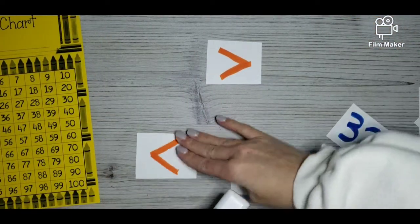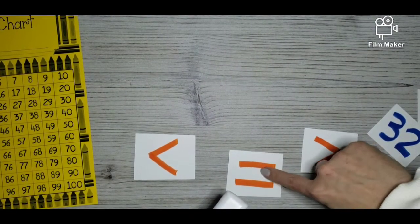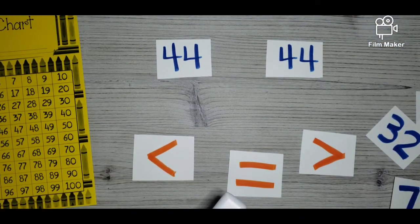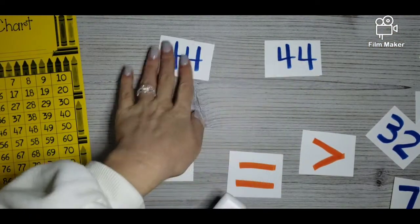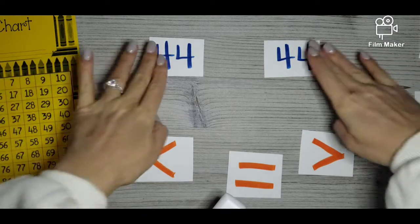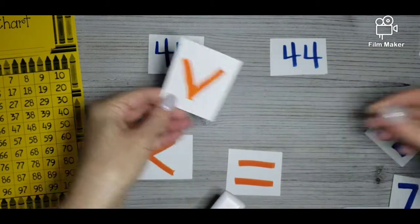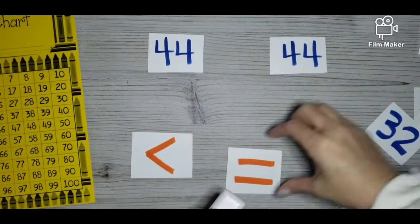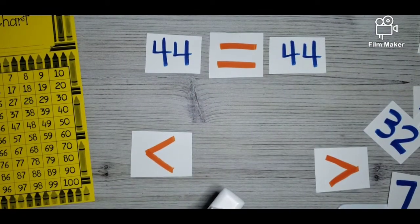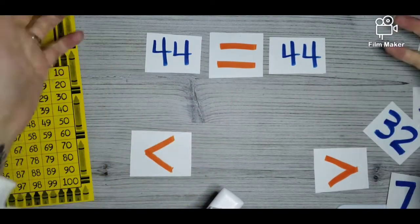All right. I have one more for you. Is there a symbol that we have not used yet? Yes. Good. This one right here, the equal to symbol. What do you notice about these two numbers? 44, 44. What do you notice about those numbers? Yes, they are the same. So can we put this symbol in? No, because 44 is not bigger than 44. That is when we have to use this symbol called the equal to symbol. When numbers are the same, we use equal to 44 is the same as 44. Great job.